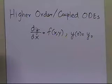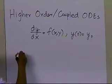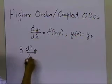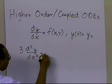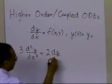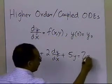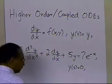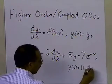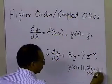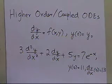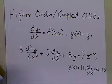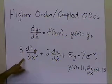We'll take you through an example. Suppose somebody gives us a second-order differential equation: 3 times the second derivative of y, plus 2 times the first derivative of y, plus 5y equals 7e^(-x), with two initial conditions — y(0) = 11 and dy/dx at 0 equal to 13. This is no longer a first-order differential equation, but a second-order ordinary differential equation.